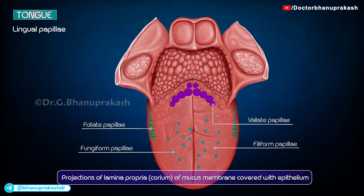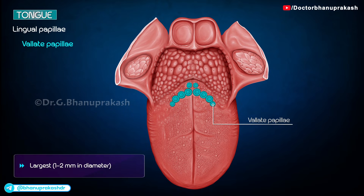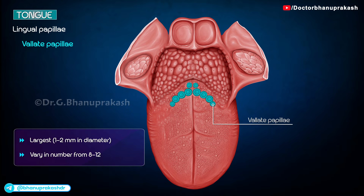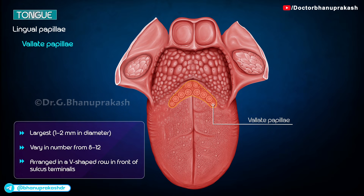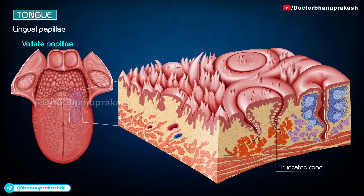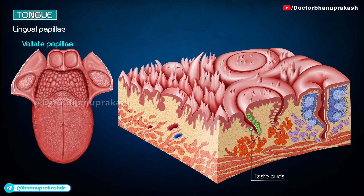Vallate papillae are the largest of the papillae, with a diameter of 1–2 mm. They vary in number from 8 to 12. They are arranged in a V-shaped row in front of the sulcus terminalis. Each papilla is like a truncated cone surrounded by a circular sulcus, with a wall or vallum on its periphery. The duct opens into the sulcus. The taste buds are found in the papillae and its vallum.